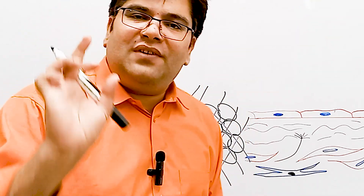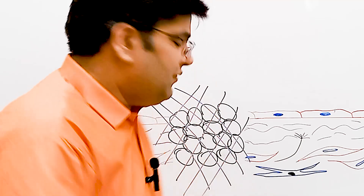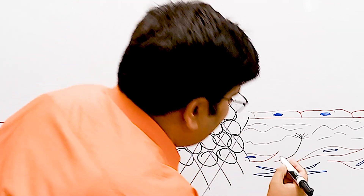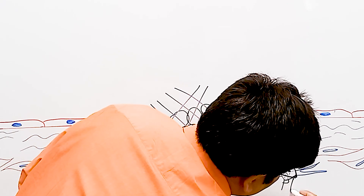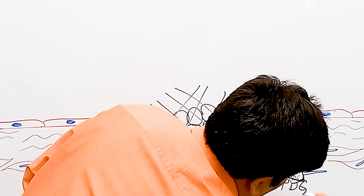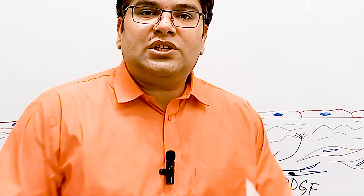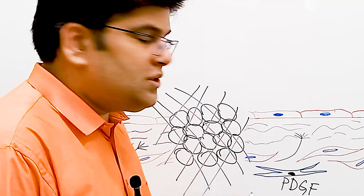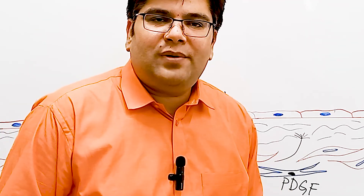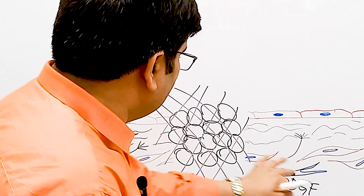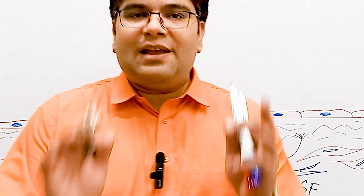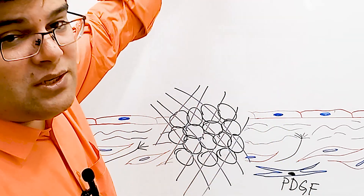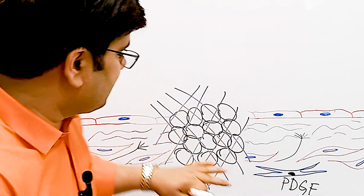The activated platelets which make the platelet plug release a growth factor called platelet-derived growth factor (PDGF). This growth factor is responsible for increased proliferation and increased function of fibroblasts, and in this way repair of the injured vessel takes place. Simultaneous to this vessel repair, fibrinolysis also occurs so that the clot is dissolved and blood flow is once again maintained.